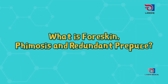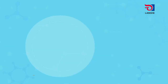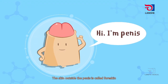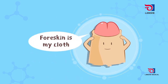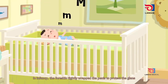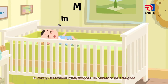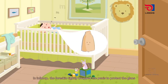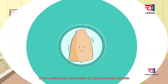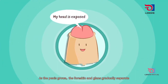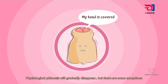The skin outside the penis is called the foreskin. In infancy, the foreskin is tightly wrapped around the penis to protect the glans. As the penis grows, the foreskin and glans gradually separate. This physiological phimosis will gradually disappear, but there are some exceptions.